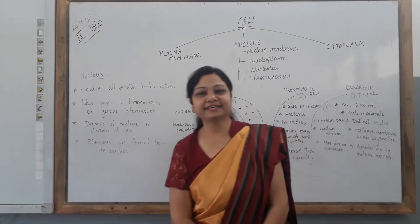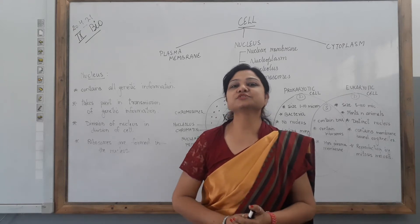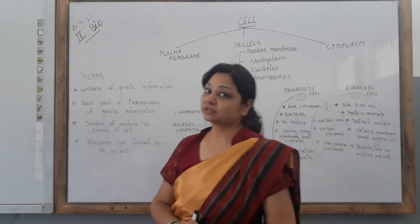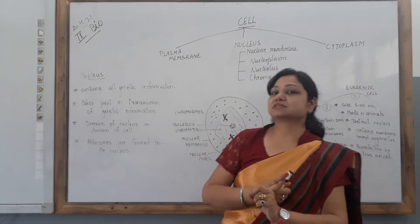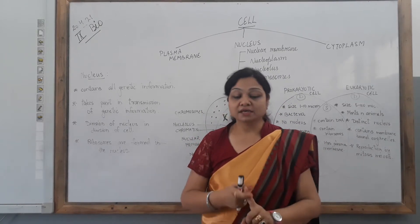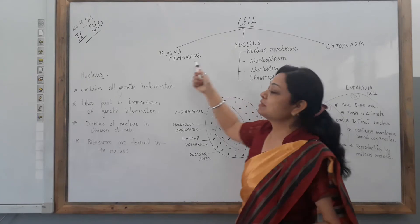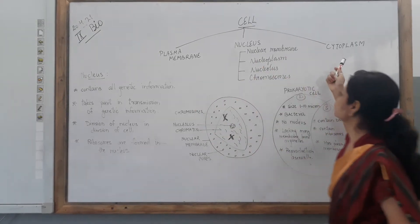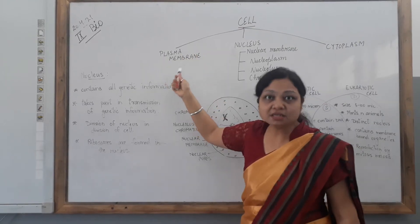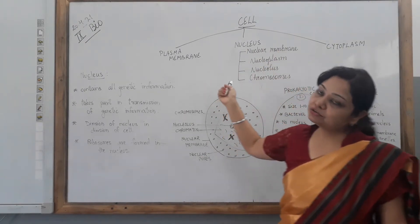Good morning students. Once again, I welcome you all in today's online class of Biology. Before starting with today's topic, let's have a brief recapitulation of the topics covered till now. We have discussed in previous videos about the discovery of cell, the various shapes and sizes of cell, the structural organization of cell — that is, the cell is made up of mainly three parts: plasma membrane, nucleus, and cytoplasm — and we have discussed the features and functions of plasma membrane. We have also discussed cytoplasm.